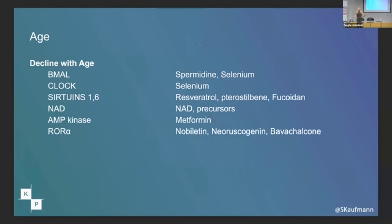I'm sure everyone here is on spermidine. Selenium is really interesting — most people are selenium deficient, and we'll talk about that in a bit. In terms of sirtuins, I'm sure everyone's on a sirtuin 1 activator, usually resveratrol, pterostilbene. But who here is on a sirtuin 6 activator? Fucoidan and cyanidin are the big important ones. Fucoidan is the easiest to get — it comes from a seaweed from Japan. Very important.